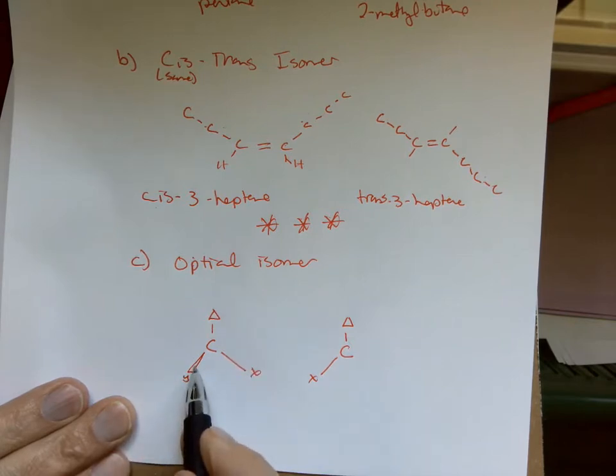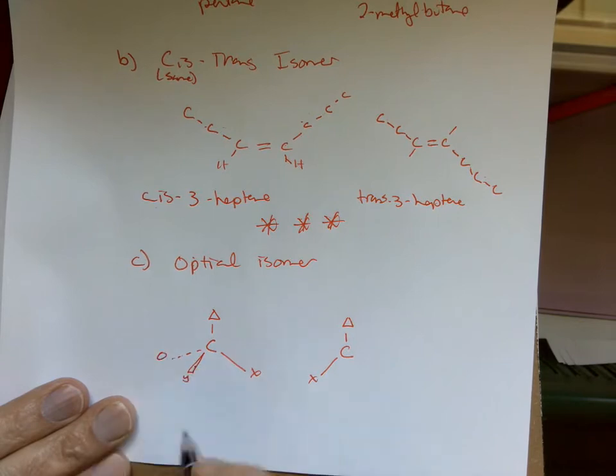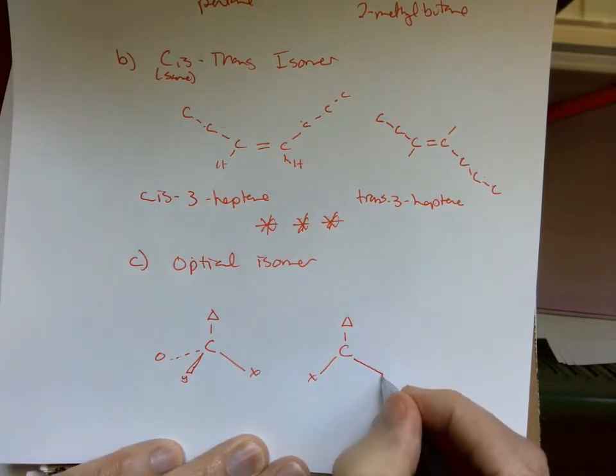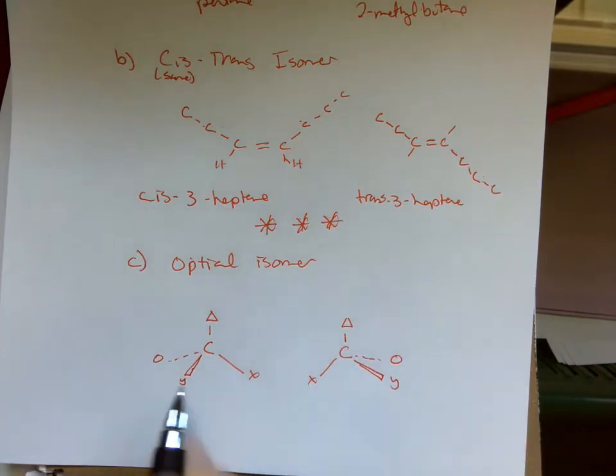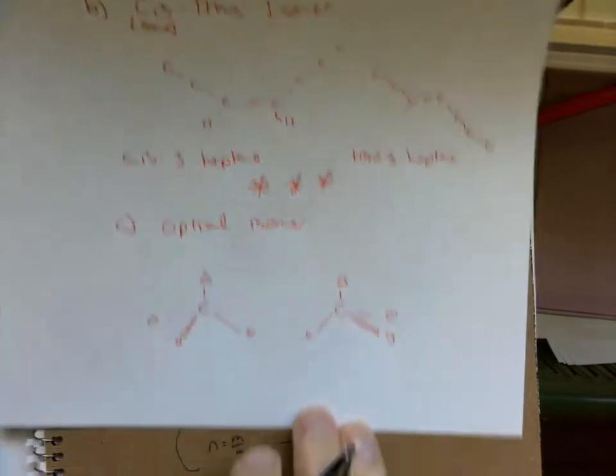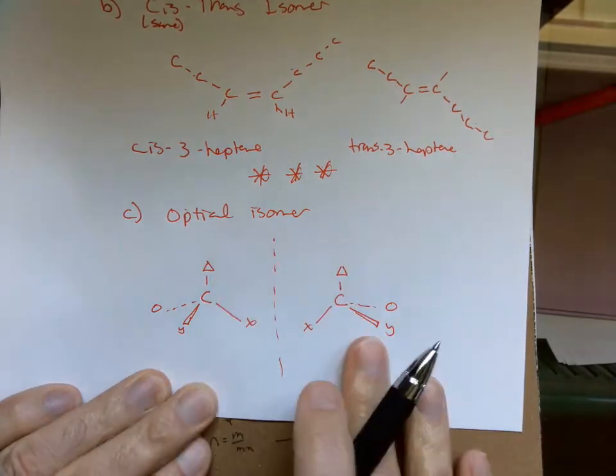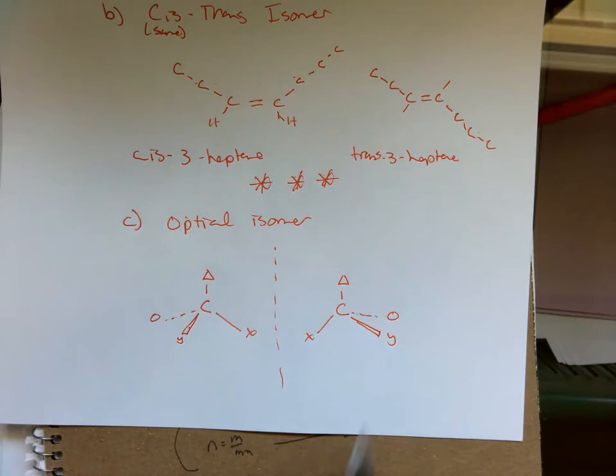This symbol here is a bond coming out from the page, so this is just some three-dimensional drawings, and this is going back into the page. Now if you're like me, when you look at these two structures here, you think they look exactly the same, but they're not the same. They are mirror structures of each other. So if you had a mirror in between here, this would be like looking in the mirror. If you built these models and you spun them around, you would see they're not exactly the same.